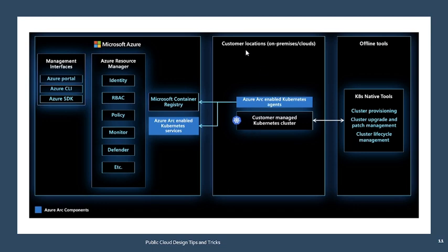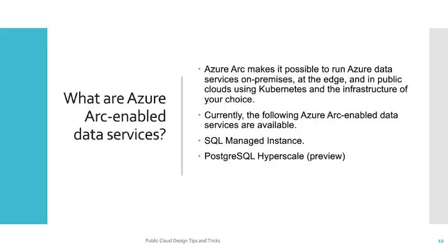As you can see in this diagram, at the customer location — that is, your on-premise location — the Azure Arc enabled Kubernetes agent has been installed and linked with Azure Arc enabled Kubernetes servers. With this you get all native Azure capabilities like identity, RBAC, policy, monitoring, and Defender on your on-premise server. Azure Arc also makes it possible to run Azure data services on-premise, at the edge, and in public clouds using Kubernetes and infrastructure of your choice. If you have a database on-premise, you can link it to Azure Arc, enabling on-premise databases to be monitored through Azure Arc.